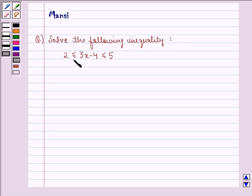The inequality is 2 is less than or equal to 3x minus 4 is less than or equal to 5. In this question we need to solve the given inequality.